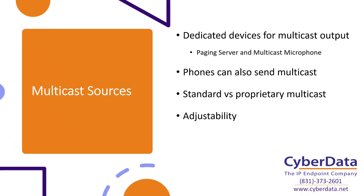Now that we've got the zoning figured out, you need to determine what is going to be your multicast source. With CyberData, we always recommend using something like our paging server, because it gives you a simple head unit to call and multicast to up to 100 different paging groups, giving you wide capability to set up your zoning options. But you can also do that from a regular desk phone. Most desk phones — whether it's a Yealink, Poly, Snom, Grandstream — are all going to support multicast origination and receiving. So not only can the phones send multicast, they can also receive it. In offices where you might not need a dedicated speaker, the phone's speaker can essentially operate as a paging speaker.